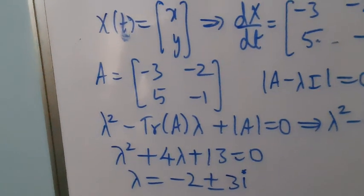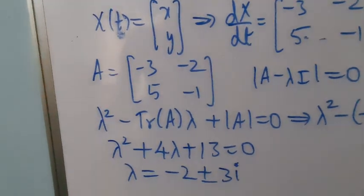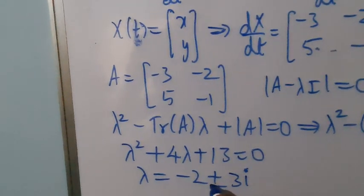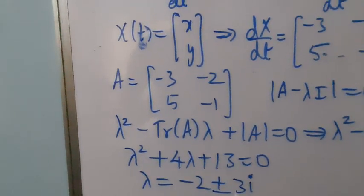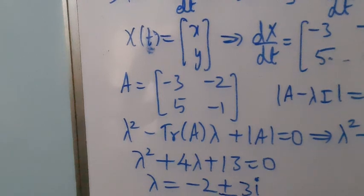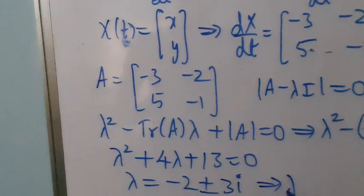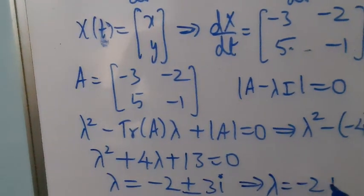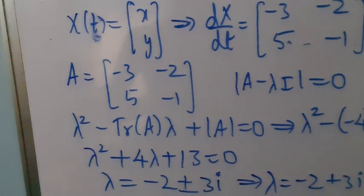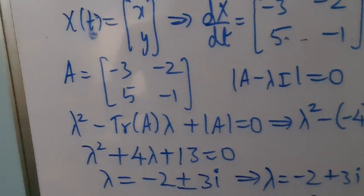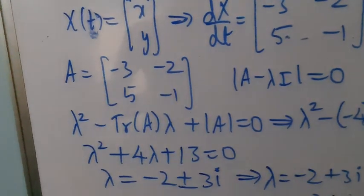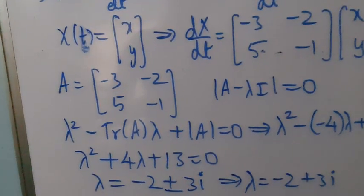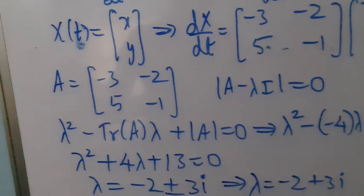Since we have complex conjugate eigenvalues, it is not necessary to find the eigenvectors for both. They will differ only by a sign in the solution of the differential equation.